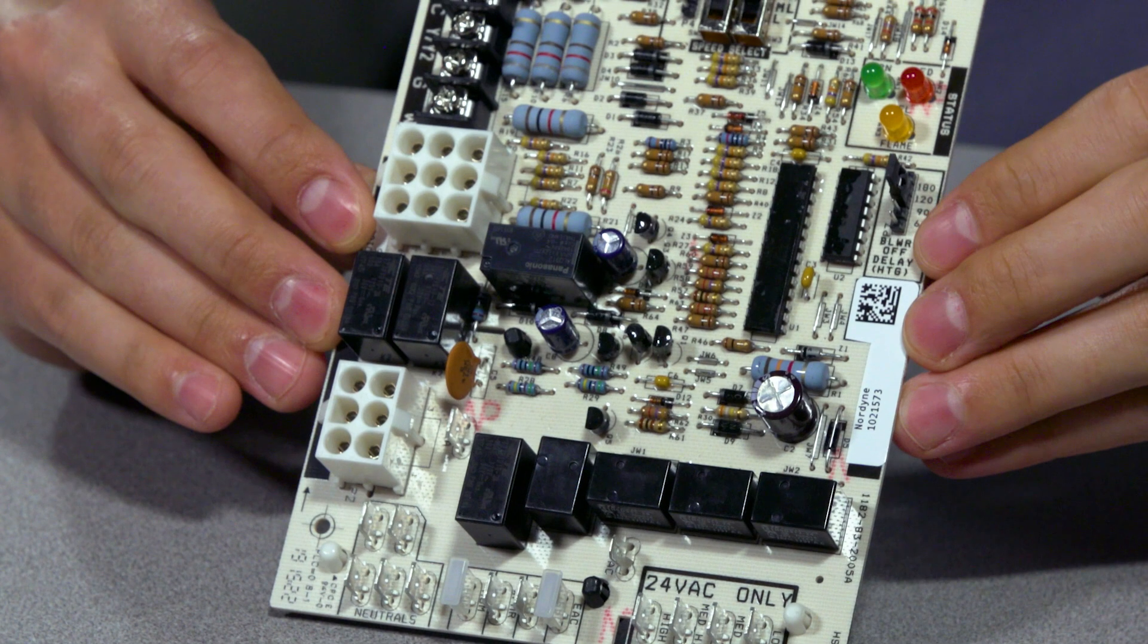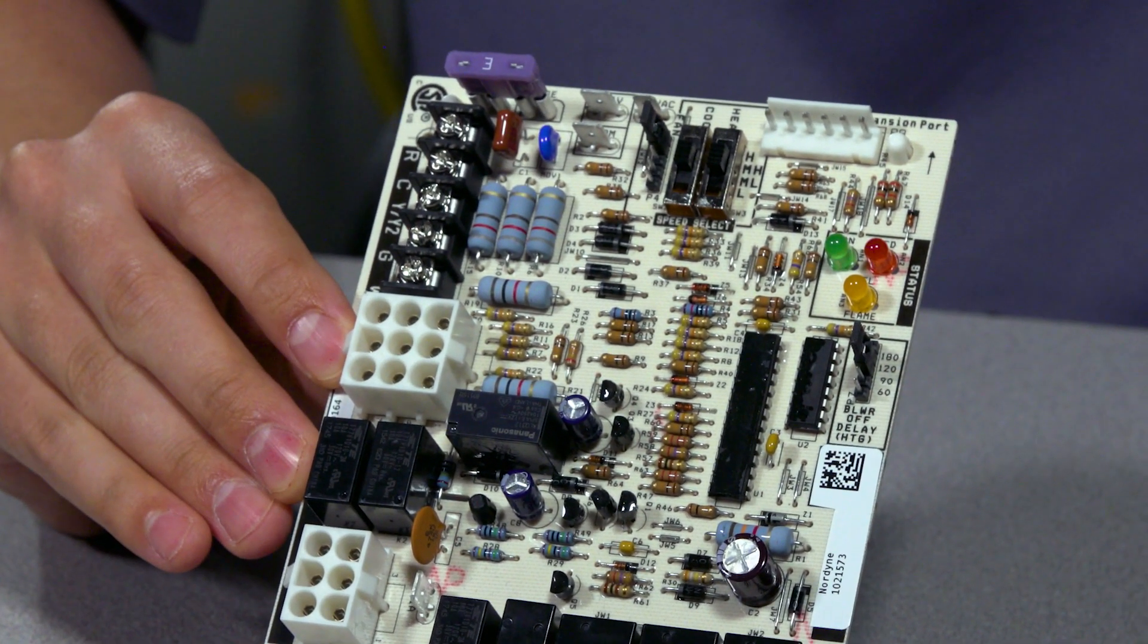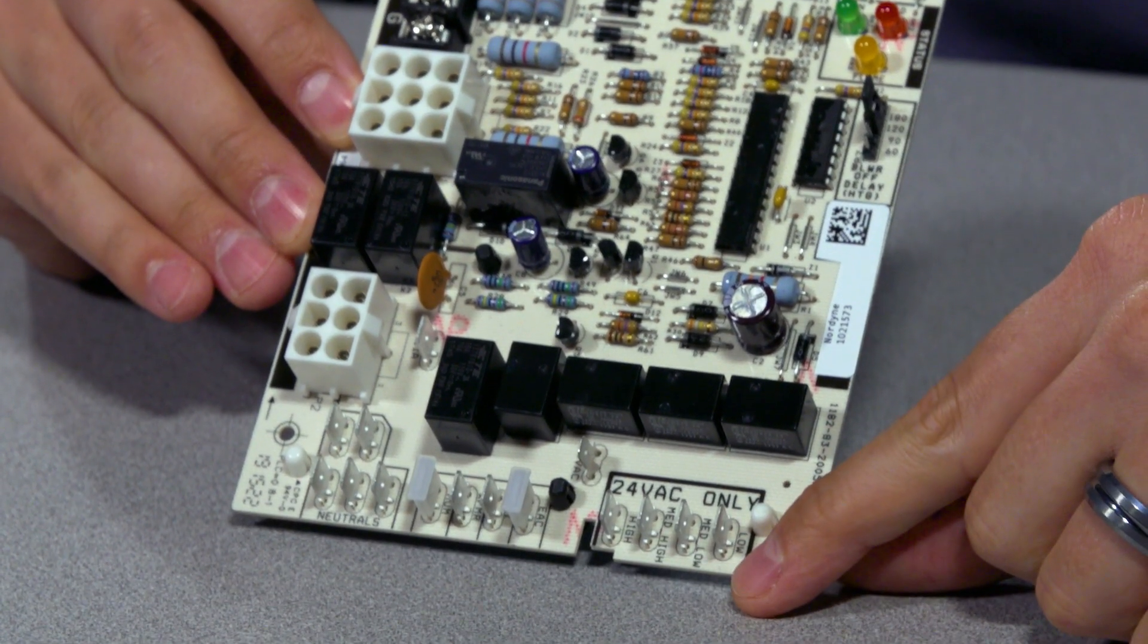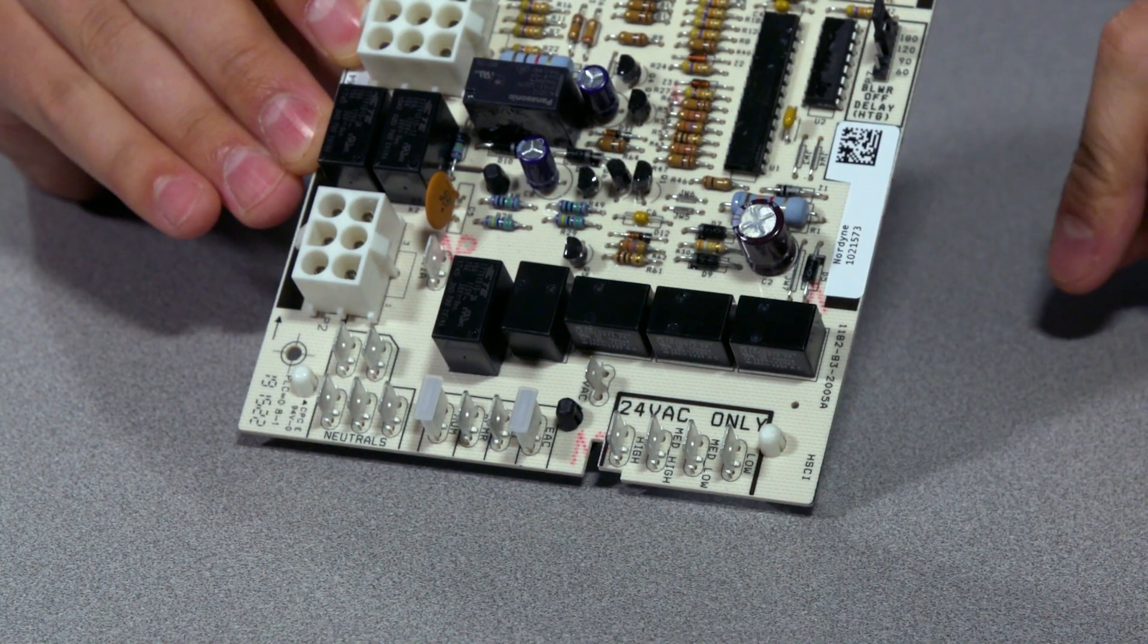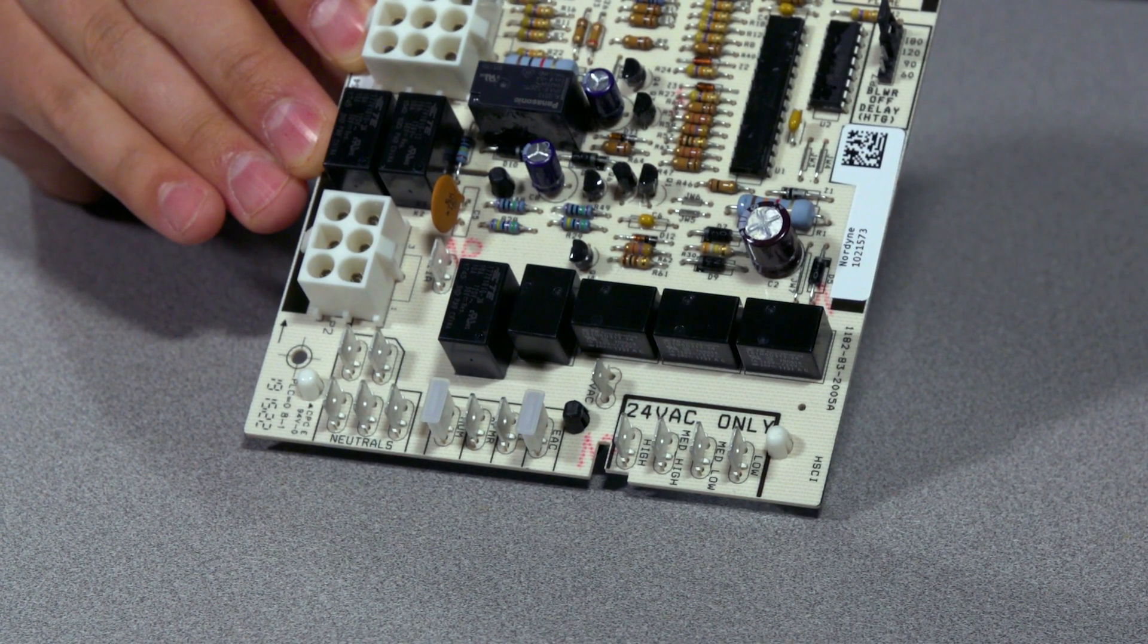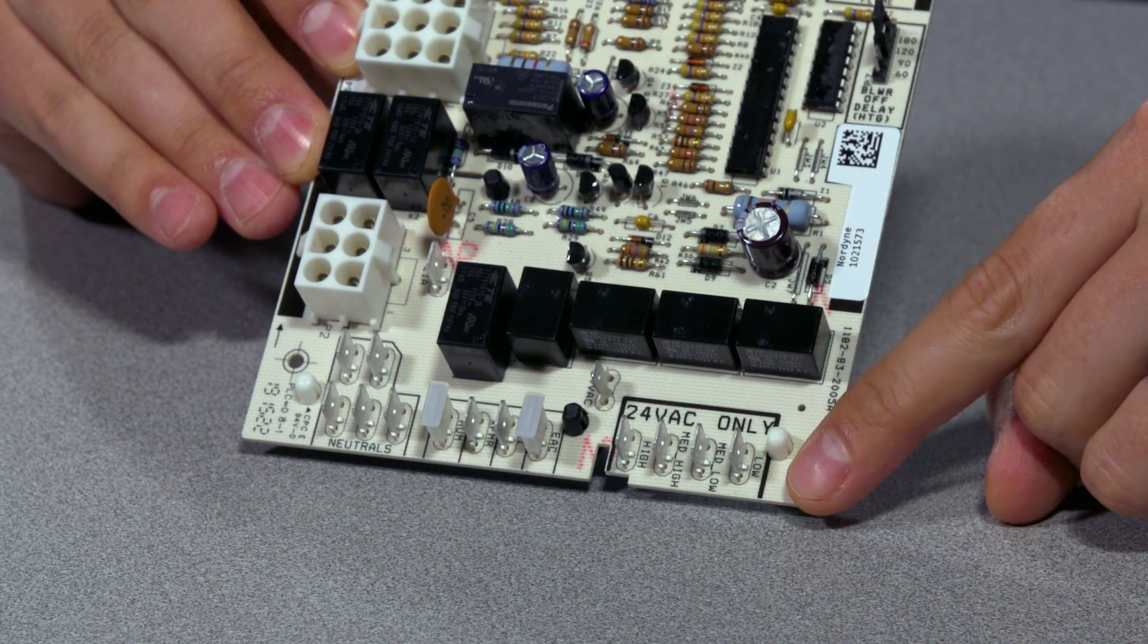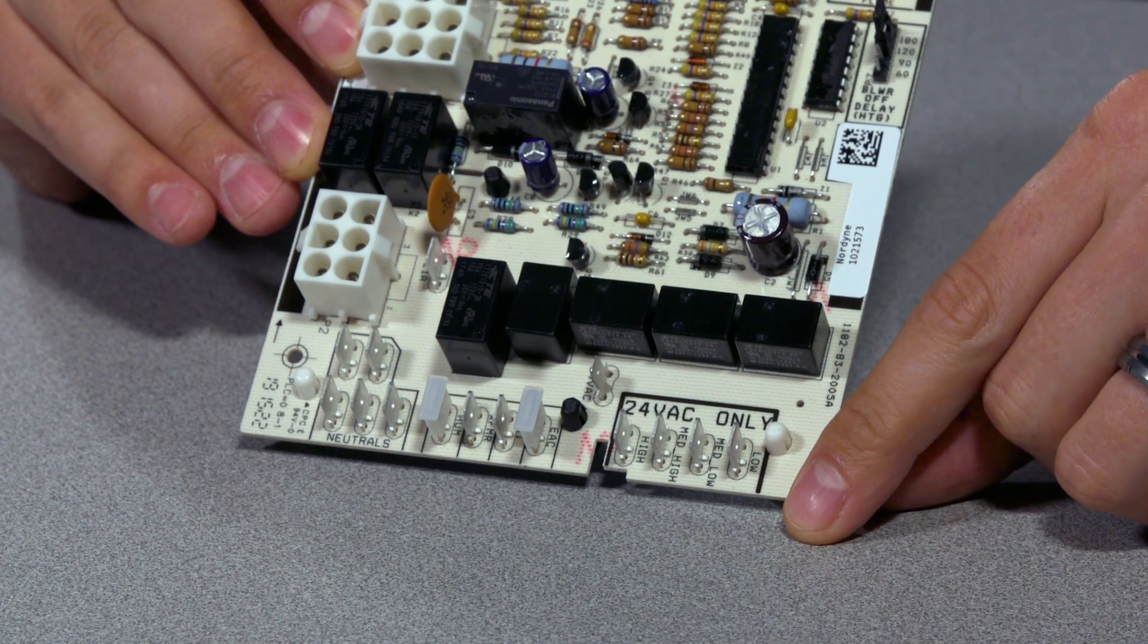So what I have in front of me here is the new G7 board. At the bottom of the board here, traditionally on the old one it was line voltage that was being outputted of the board. Now what we have switched to is this four pin plug down here is going to be a 24 volt VAC or AC current going to that motor.